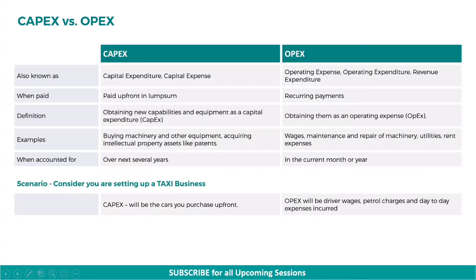CapEx is also called capital expenditure or capital expense, whereas OPEX is also called operating expense, operating expenditure, or revenue expenditure. CapEx payments are paid up front in a lump sum, whereas OPEX payments are recurring payments paid over a month or year.